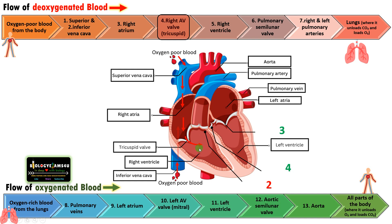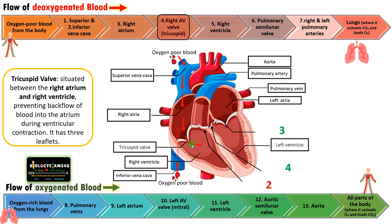The tricuspid valve is situated between the right atrium and right ventricle. It prevents the back flow of blood into the atrium during ventricular contraction. It has three leaflets. The movement of blood through the heart is unidirectional, and that is regulated by these valves.